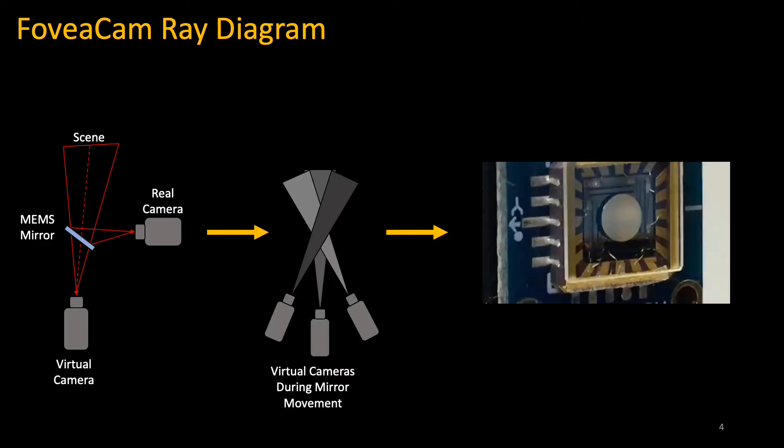So we built a camera that can selectively distribute resolution to only important areas of the scene. We do this by pointing a camera at a programmable MEMS mirror. This MEMS mirror can tilt in a 2D plane and update at up to 120 kHz. We leverage this to give simultaneous views of many regions of interest in a scene all at once.